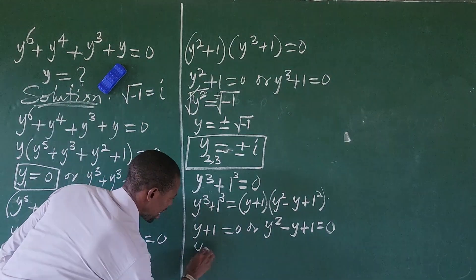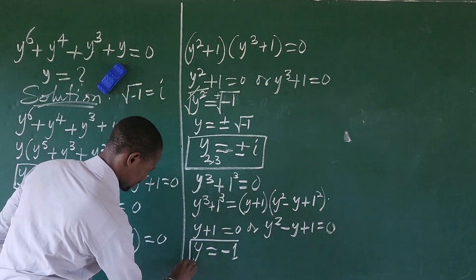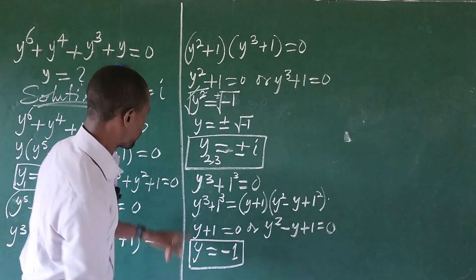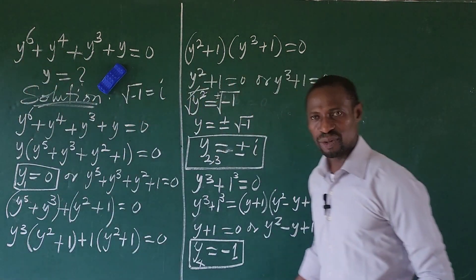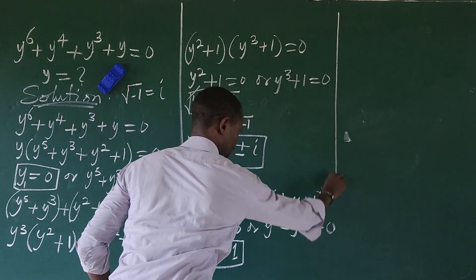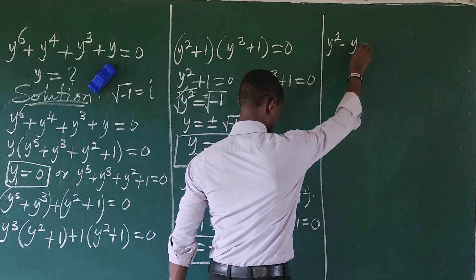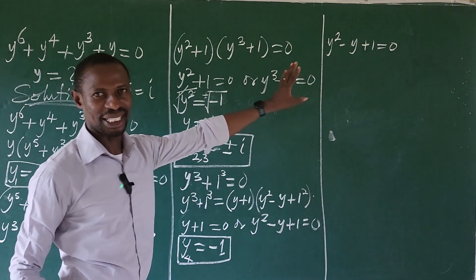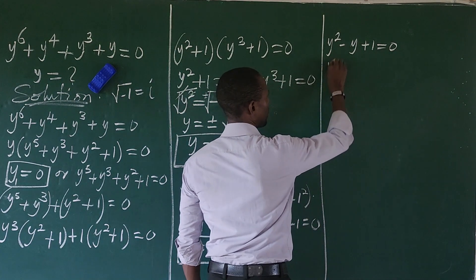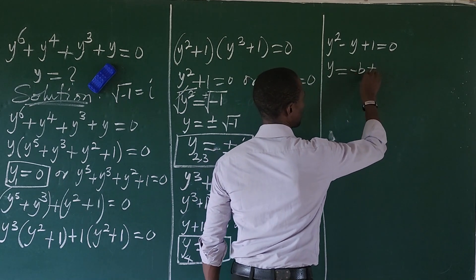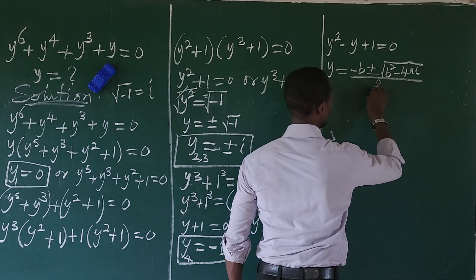From the first factor, y + 1 = 0, so y = −1. We've gotten another root: y₄ = −1. So we have two more roots to make it 6. Let's solve the last equation, which is y² − y + 1 = 0. This is a quadratic equation, so let's solve it using the quadratic formula.